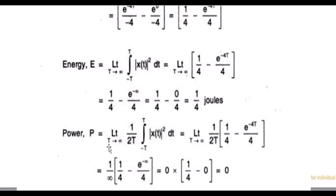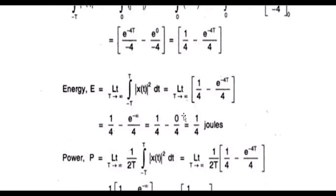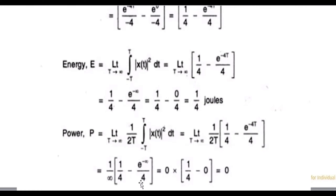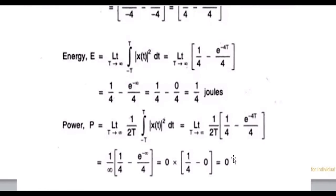So now I will calculate the power of the signal. This is the formula: the limit as T tends to infinity of 1/(2T) times the integral from minus T to T of |x(t)|^2. Using the same formula already evaluated, I can say that the power of the signal is zero, whereas the energy is 1/4. This is quite obvious — since the energy is finite, the power is zero.